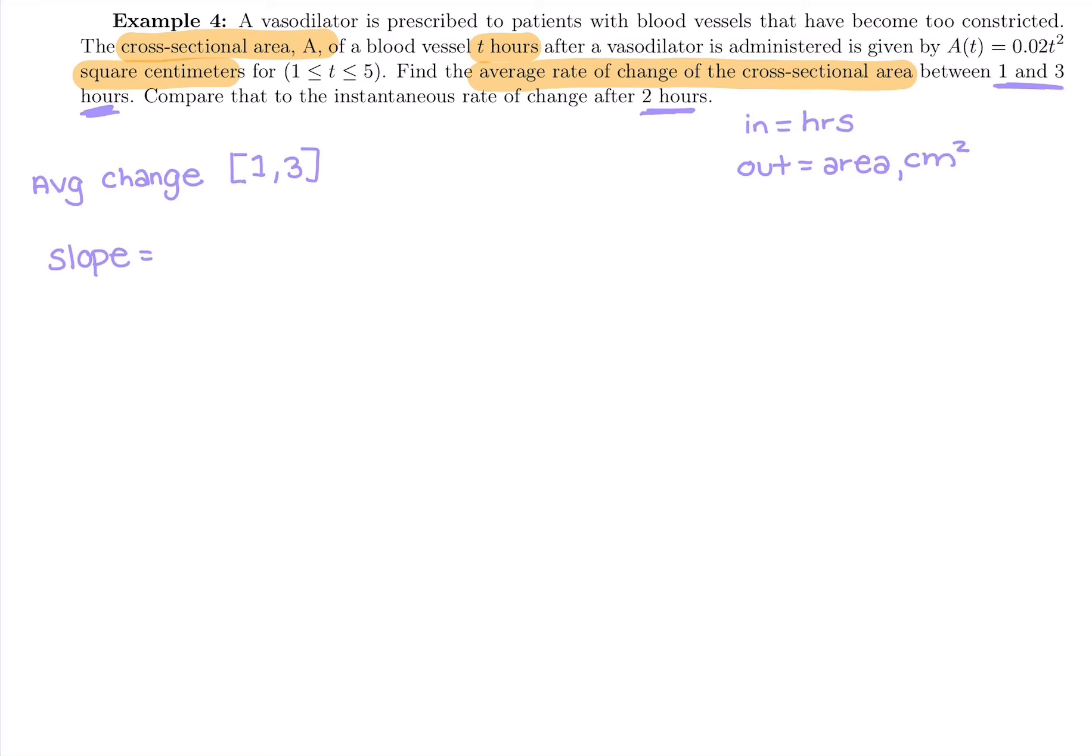So we're going to use the slope formula there. We're going to do F of B minus F of A over B minus A. So for this one, we're going to do A of three minus A of one all over three minus one. And we're plugging in to this formula here for A of T, which is 0.02 T squared.